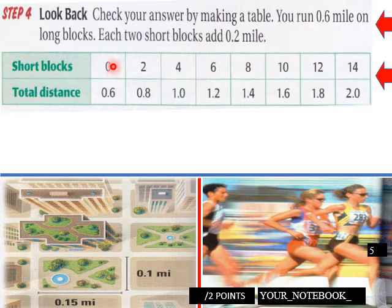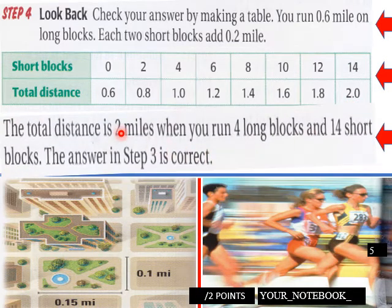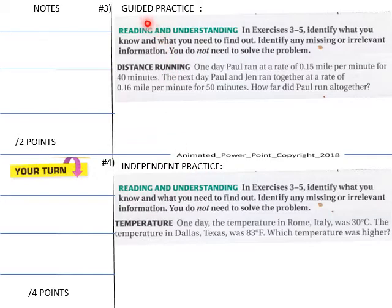So with your table, what you have here, you have 0.6, and if you run 0 short blocks, you have 0.6. And then with 2 short blocks, it'll be 0.8 because the short block is 0.1. So when you add 8 short blocks, you have 1.4. And when you add finally 14 short blocks, you've ran your 2 miles. So the total distance is 2 miles when you run 4 long blocks and then 14 short blocks. So the answer, it'll be 4 longs and then 14 shorts. The answer in step 3 is correct when you do that.